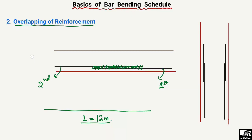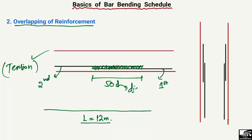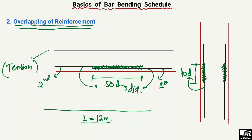In the case of tension members such as beams, the overlapping length is generally taken as 50 times d, where d is the diameter of the steel bar. For compression members or columns, the overlapping length is taken as 40 times d, where d is the diameter of the steel bar. The purpose of the overlapping length is to transfer the load from one steel bar to another because the standard length of a single bar is not sufficient.